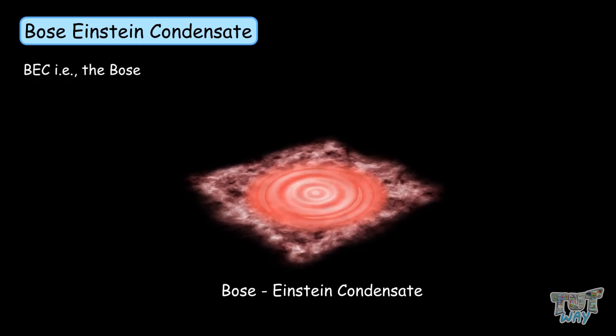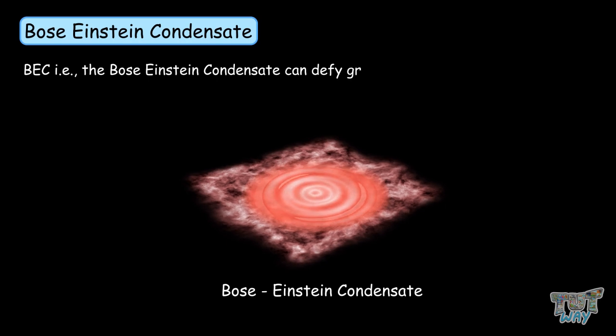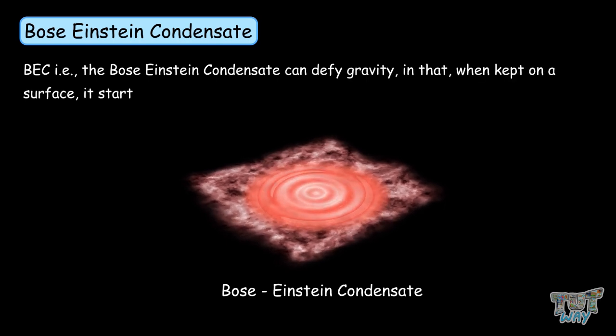BEC, that is, the Bose-Einstein condensate, can defy gravity, and when kept on a surface, it starts flowing upwards.